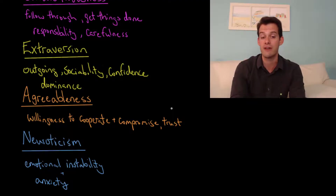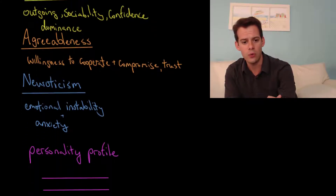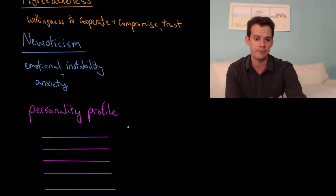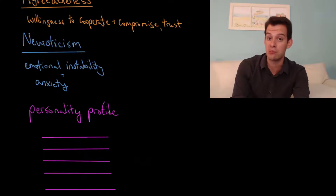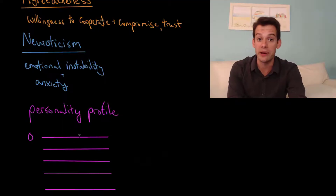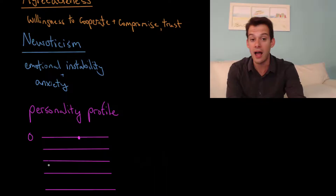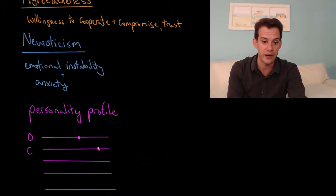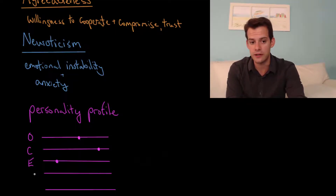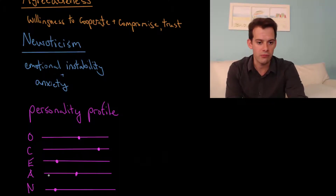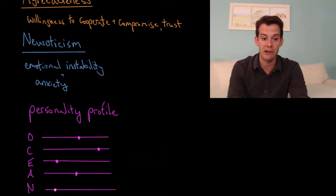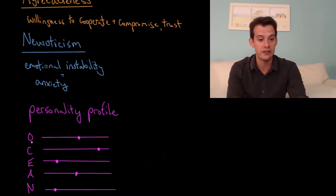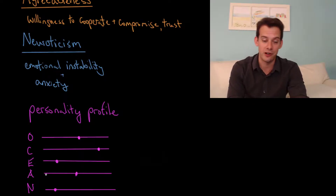The fifth factor is neuroticism, which refers to someone's level of emotional instability or their tendency towards anxiety. Going through the assessment tells you where you stand on each of these five dimensions, giving you a unique personality profile. A helpful mnemonic for remembering these five factors is OCEAN — openness, conscientiousness, extroversion, agreeableness, and neuroticism.